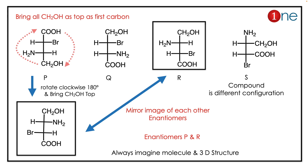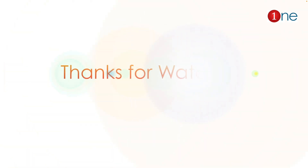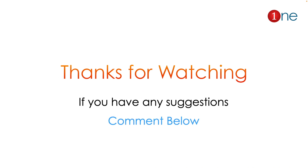The mirror images are opposite each other, so the enantiomers are P and R. You have to imagine the molecule and analyze its 3D structure, otherwise you will make a mistake. The key concept here is: the compound that has a mirror image relationship is an enantiomer.